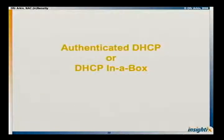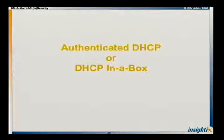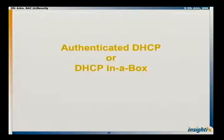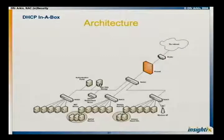I saw someone from a network access control vendor write in his blog that their customers frequently ask about the problem of assigning a static IP address and bypassing the solution. But since they're not able or willing to deploy 802.1x, they'll still go and implement the DHCP proxy and it's okay with them. Well, you can judge yourself if it's okay or not — I don't think it's okay. Another funny solution, in my opinion, is what I call the DHCP in a box.